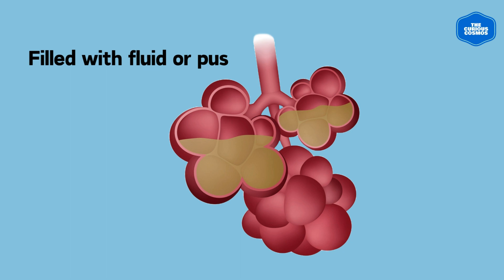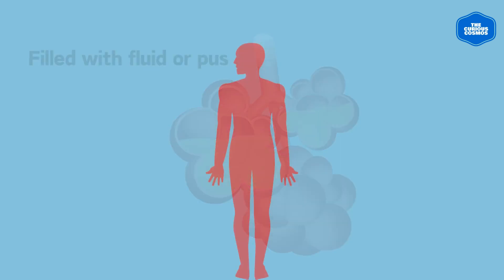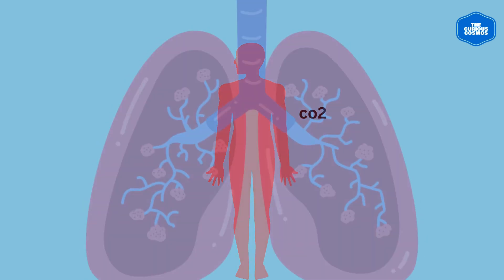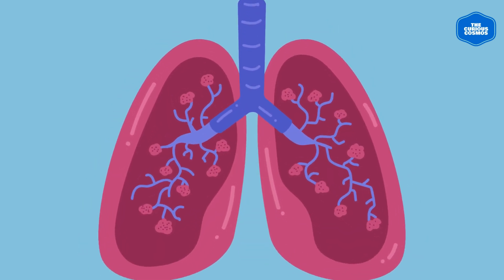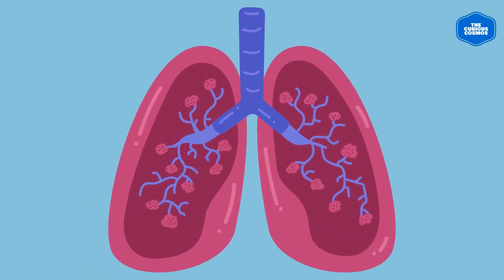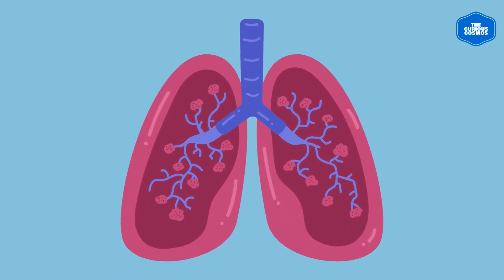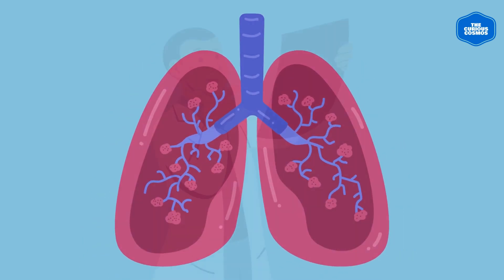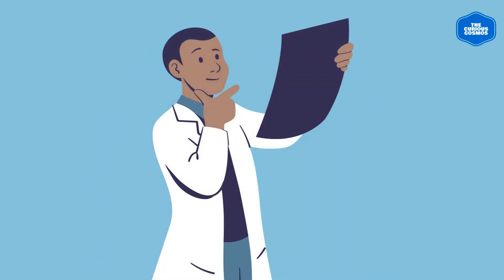When this fluid builds up, it makes gas exchange inside the alveoli much more difficult. As the level of carbon dioxide in the bloodstream rises, the body breathes more quickly to clear it out and get more oxygen in — this rapid breathing is one of the most common symptoms of pneumonia.